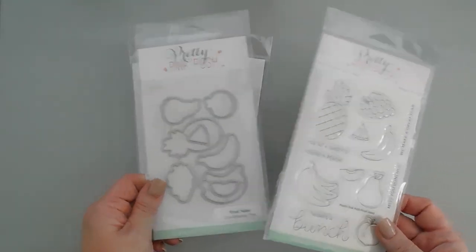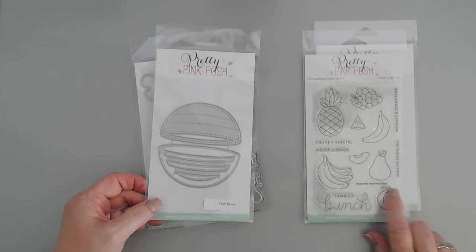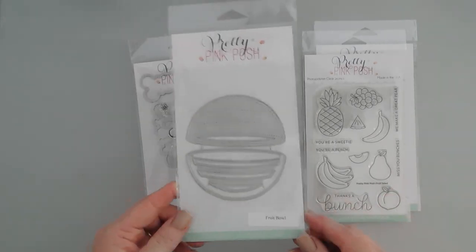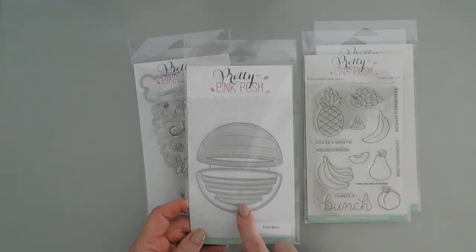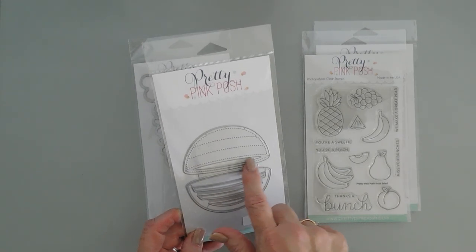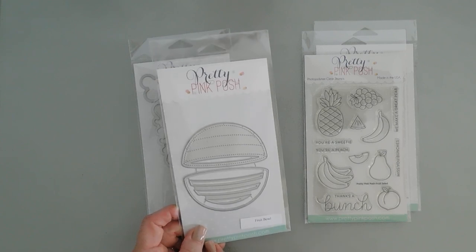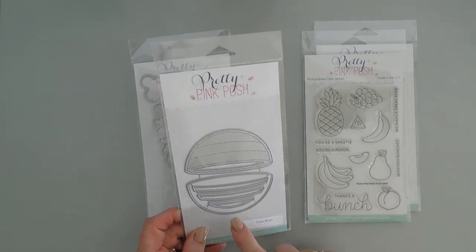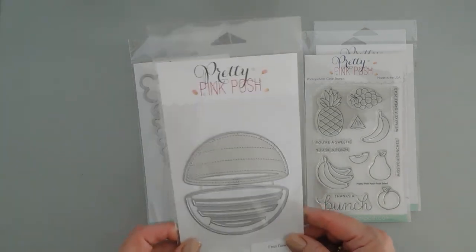So we're going to use the coordinating dies to cut those images out. To put our fruit in our bowl, we're using the fruit bowl die. So cute. This is a three-piece die set. It does have some stitch detail, which I love. And then there's an open spot that actually you could even create a little pocket with the fruit bowl die.